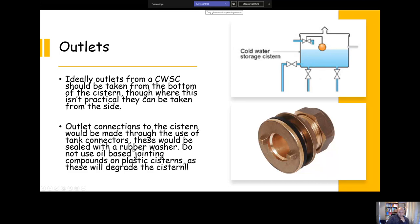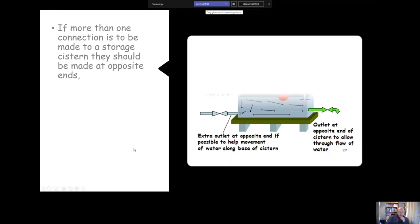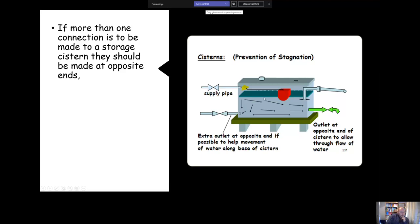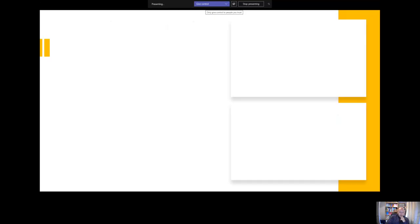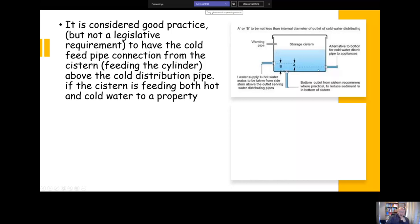If we have more than one connection, we should make them at opposite ends. That's to encourage through flow of water and minimize the risk of stagnation. Ideally we should always take our cold feed connection, the one which is feeding the hot water cylinder, off above our cold distribution. That's essentially to help prevent scalding.